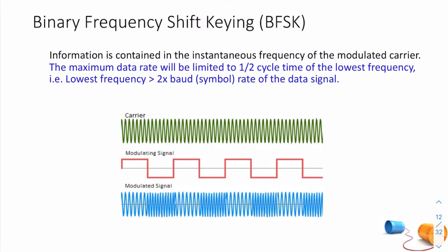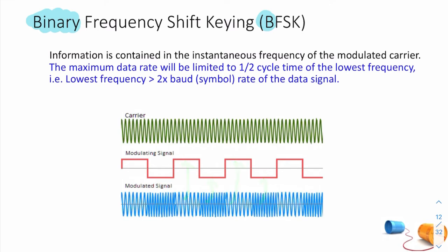For binary frequency shift keying, we also have two levels, but the information is encoded in the frequency rather than amplitude. We have a low frequency and a high frequency — in this case low frequency corresponds to 1 and high frequency to 0. It looks a bit like the combination of two ASK signals, and we'll look at why in a few minutes.